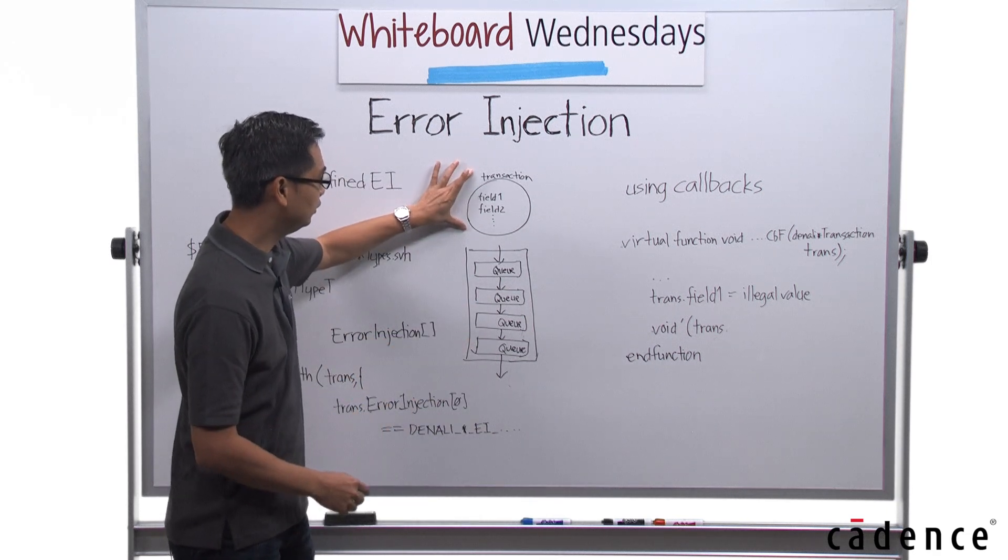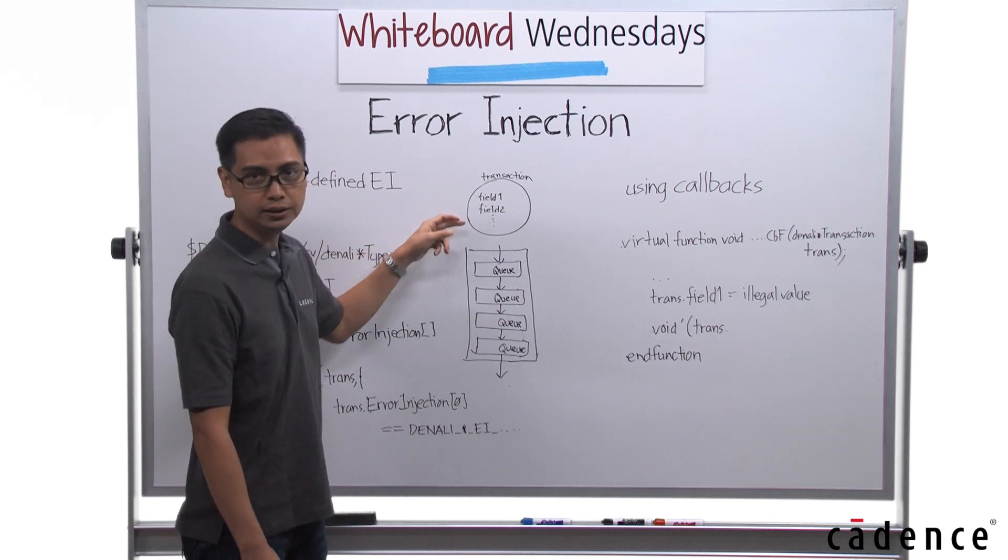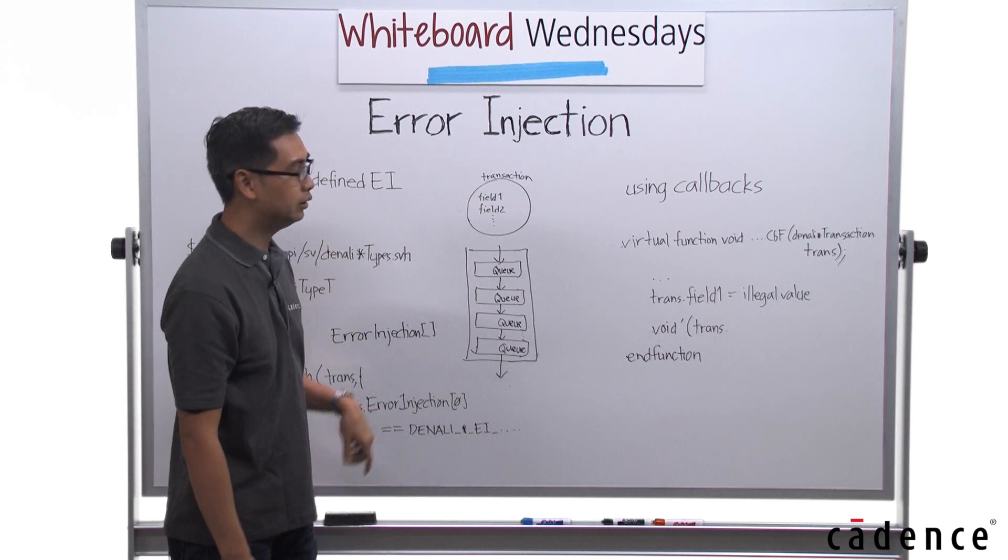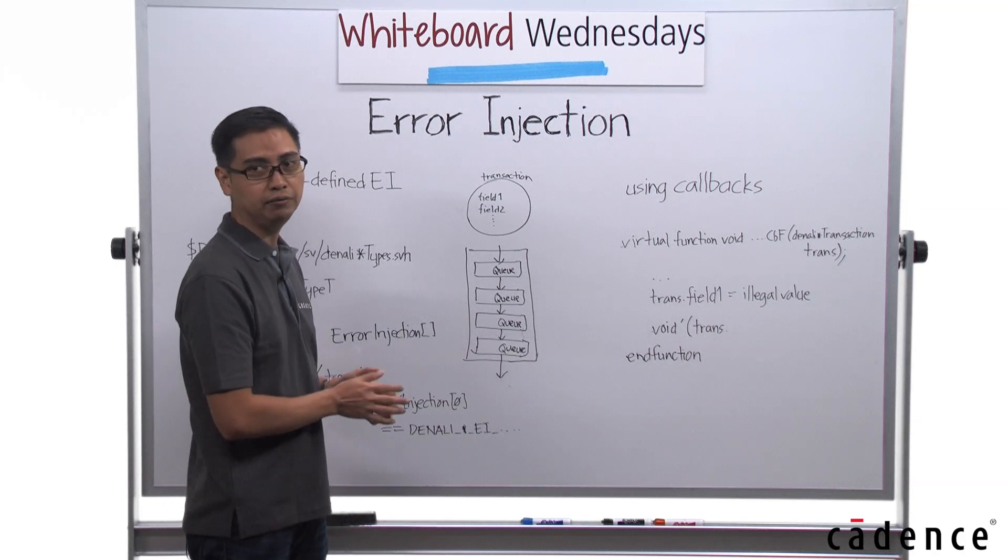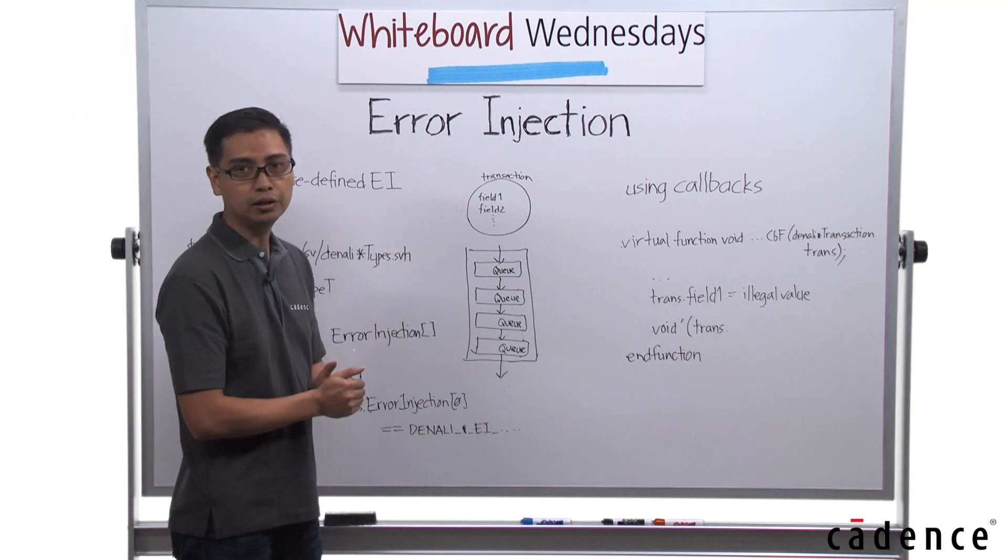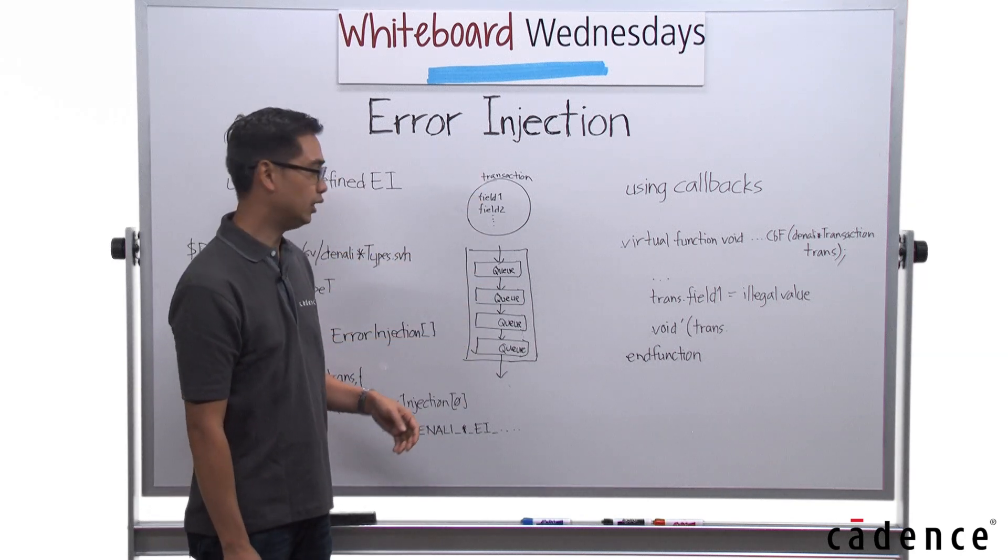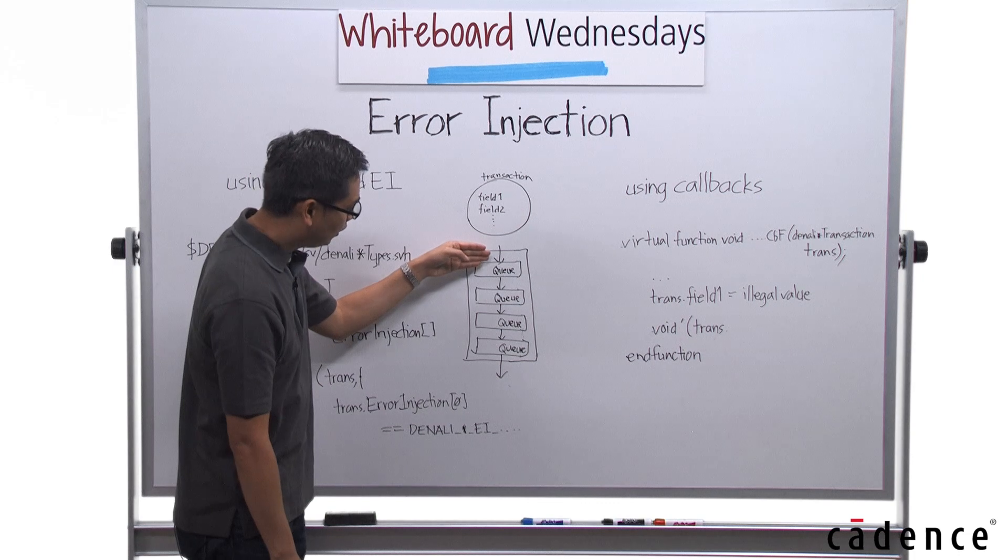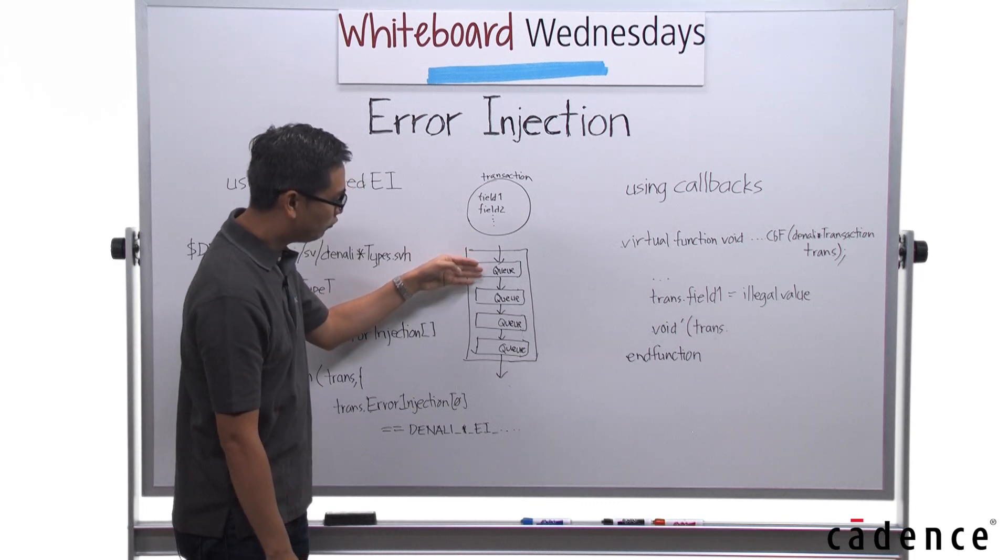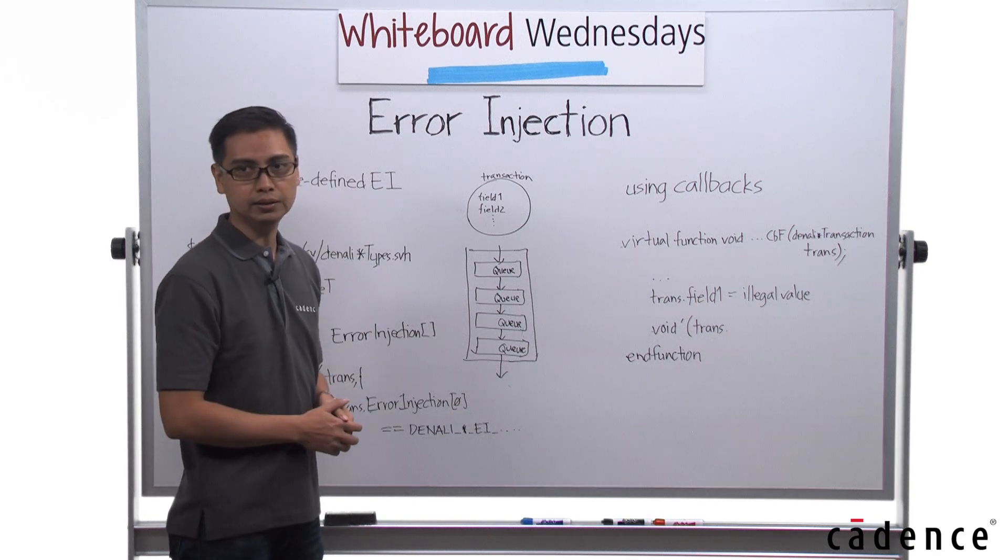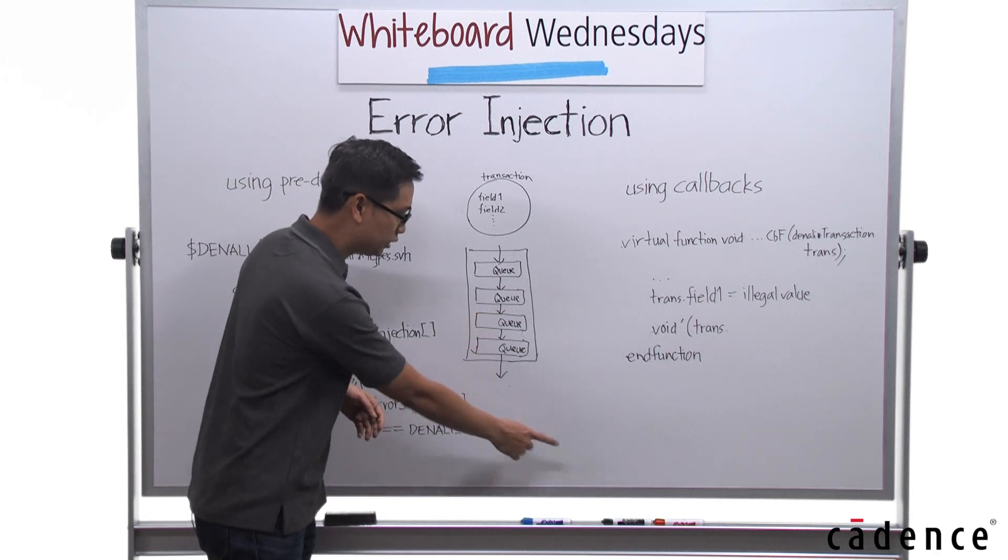So, your transaction has fields in it, and when you generate your transaction, the relevant fields get their values. All of these are according to the specifications. Now, it goes through the different stages of the VIP, and as it gets to the different queues, the relevant fields also get updated, and then it gets transferred.